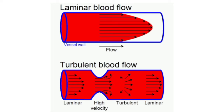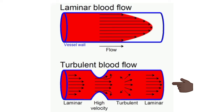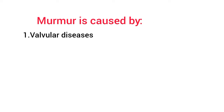Cardiac murmur is produced because of a change in the pattern of blood flow. Normally, blood flows in the same line through the heart and blood vessels. However, during abnormal conditions like valvular diseases, the blood flow becomes turbulent, and this turbulence produces the cardiac murmur. Murmur is produced because of valvular diseases, septal defects, and valvular defects.